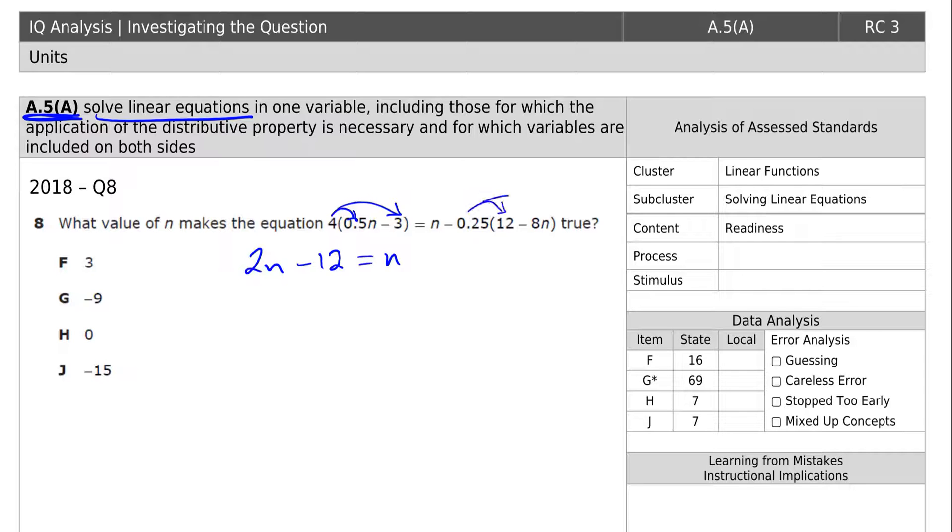Now we have another parentheses, and we're distributing, and we're very careful that that is a negative 0.25. Once again, if you're good with decimals, you know that's 1 fourth, so it's going to be 1 fourth of 12, which is 3. And since it's negative 0.25 times 12, it's a negative 3. Negative 0.25 times a negative 8n gives us plus 2n.